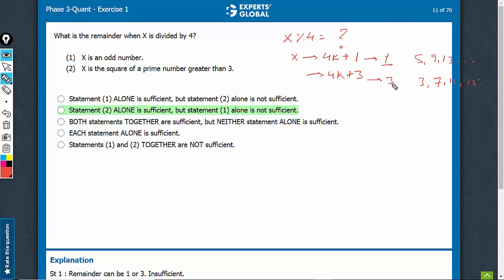So two answers are possible, 1 and 3. Statement 1 is not sufficient. Look at statement 2 now. x is the square of a prime number greater than 3. A prime number greater than 3 is going to be an odd number.